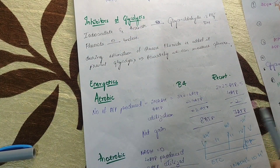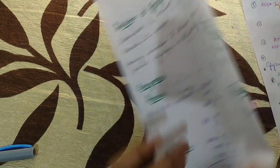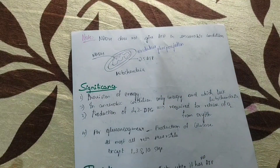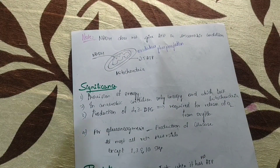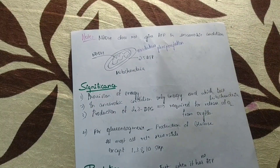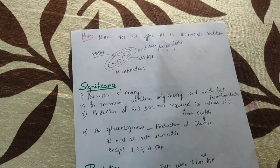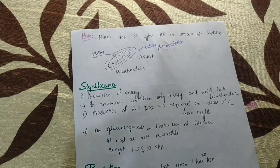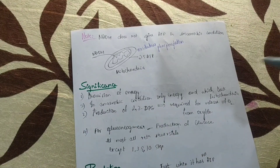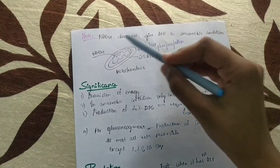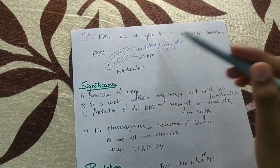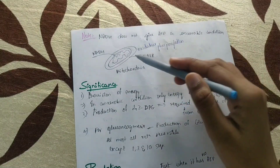One important point: NADH, even if present, cannot undergo oxidative phosphorylation to produce ATP if there is a lack of oxygen. So we should not count NADH in anaerobic conditions. If the cell lacks oxygen, NADH cannot enter the mitochondria's inner membrane for ETC or oxidative phosphorylation.